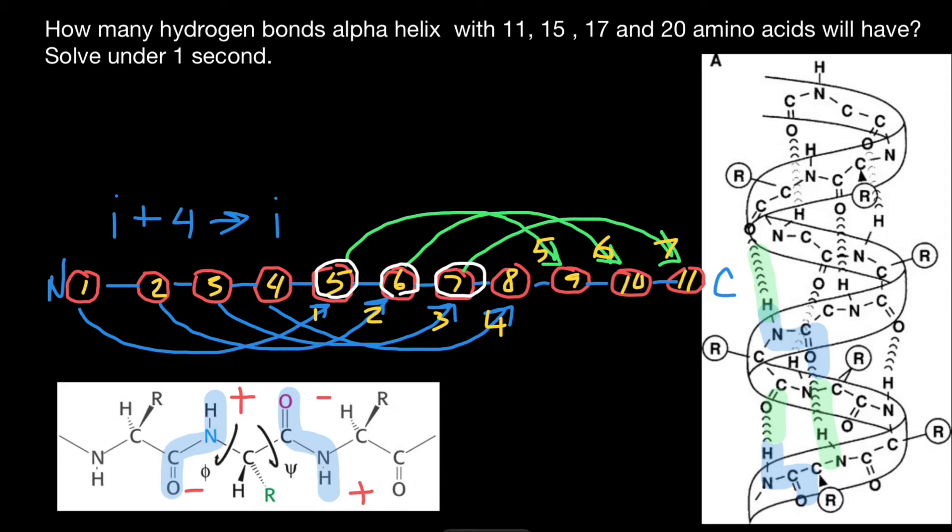So the mathematical description would be, we just have to count the number of amino acids. In our example, it is 11. So let's put 11 here and multiply by two.